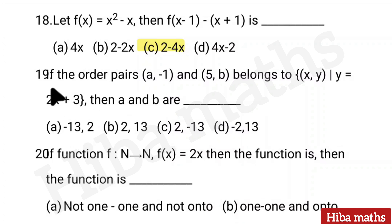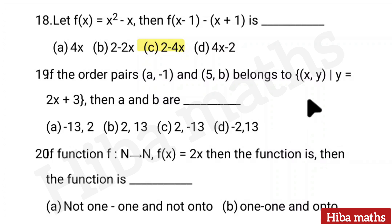Nineteenth question: If the ordered pairs (a, −1) and (5, b) belong to {(x, y) : y = 2x + 3}, then a and b are — a value and b value. Using y = 2x + 3 is straightforward. Answer: option D.